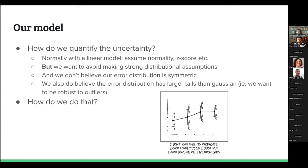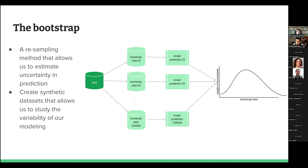We don't want to assume normality and use Z-scores for our linear regression. Instead, we use a method called the bootstrap — a resampling method that lets us estimate the uncertainty in our prediction. We have a dataset, generate 10,000 synthetic datasets by resampling with replacement, then fit our model for each of those 10,000 times. We get a distribution of model predictions, which gives us a sense of the error in our prediction based on how much variation we see across those 10,000 different datasets.